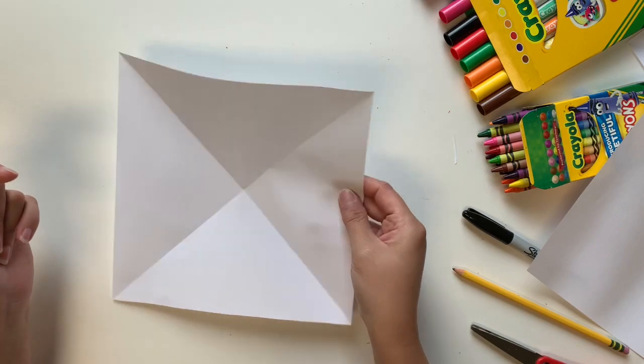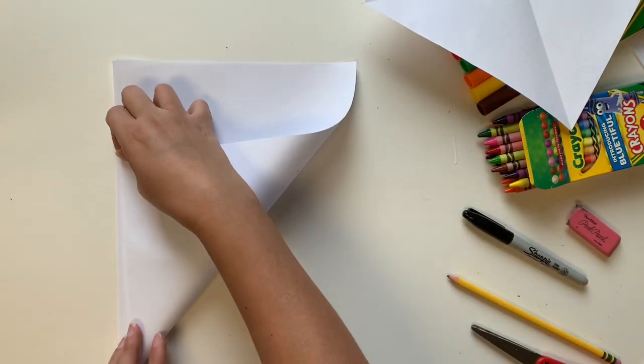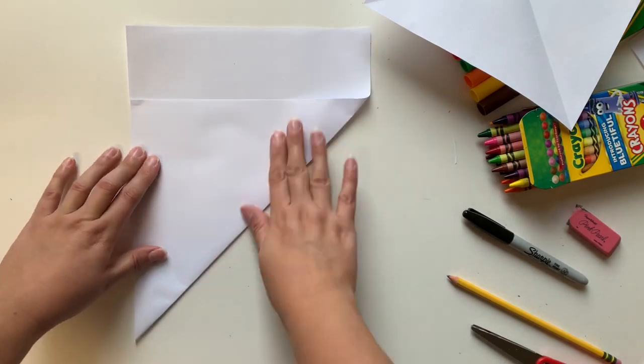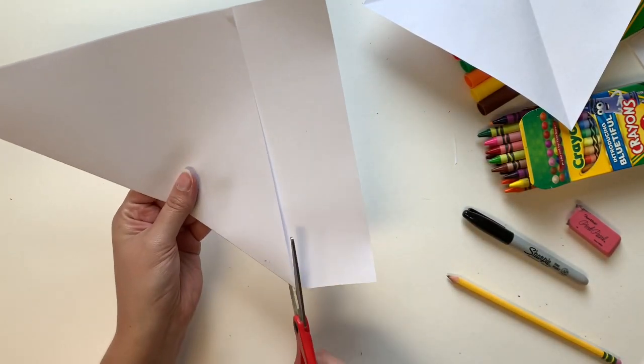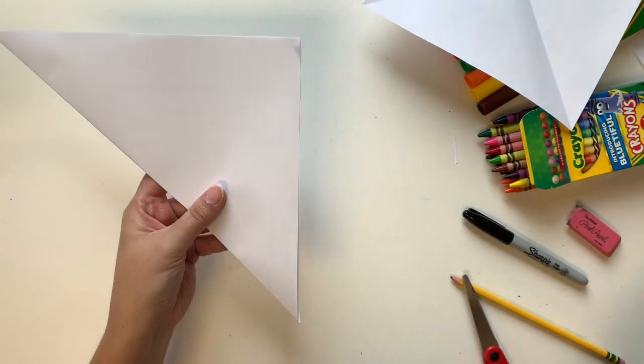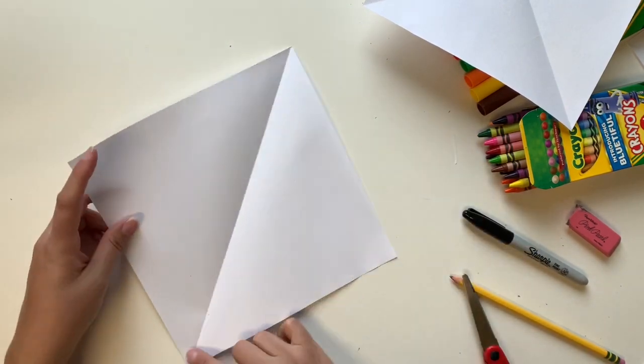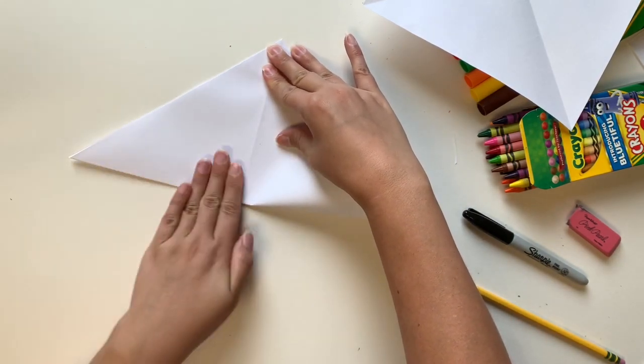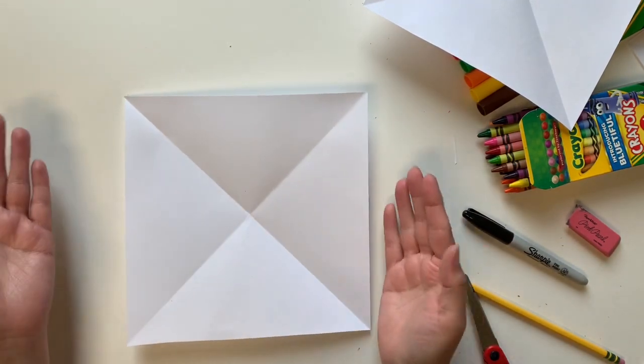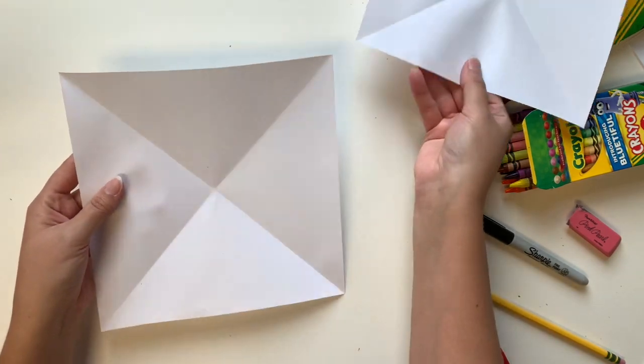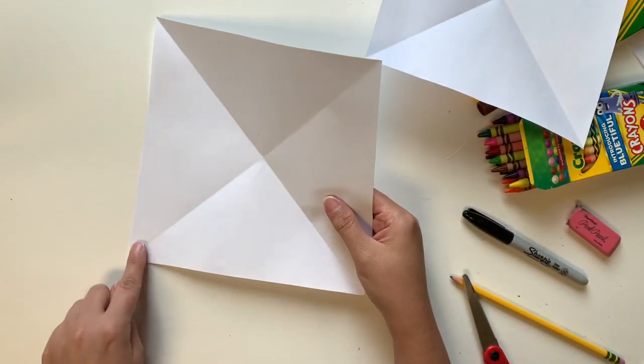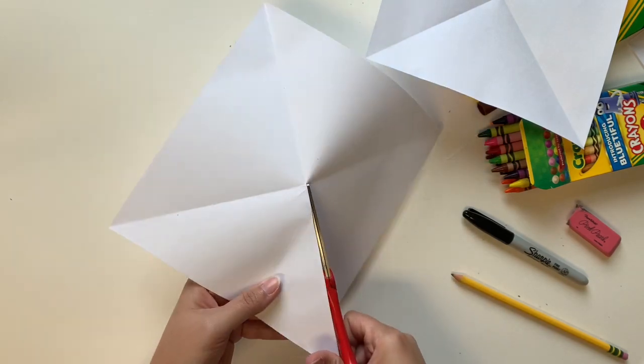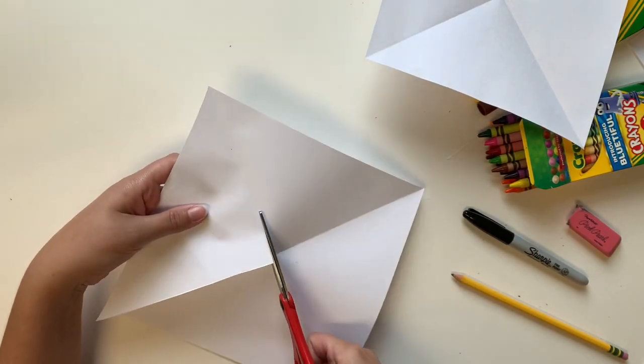And then we get to do it all over again. I'm going to put this to the side and take my second piece of paper. Unfold it. Hey, now we have fourths instead of halves. Now, one of these papers we're going to be cutting a triangle out. I'm going to cut from the corner right along the fold until I reach the center. When I reach the center, I'm going to turn my paper and cut the triangle going the other way.